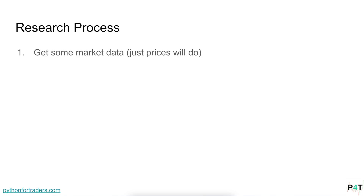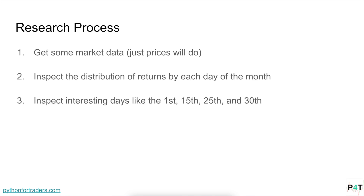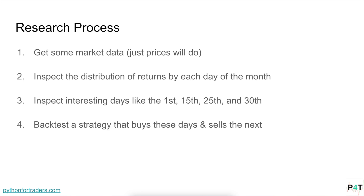The process to investigate this is: first, just get some market prices. Then we're going to look at the distribution of returns by each day of the month. We're going to look at interesting days like the 1st, the 15th, the 25th, and the 30th, which is when most people get paid. Then we're going to look at a strategy that buys on these days and sells on the next, do a backtest, and then try some variations to hopefully improve its performance.